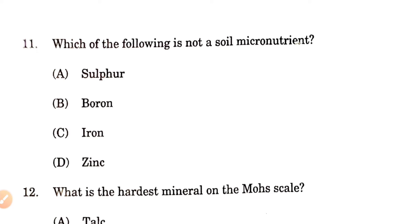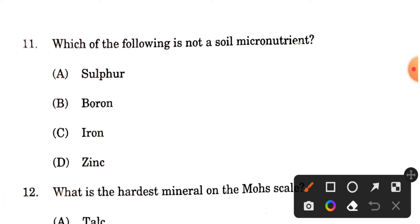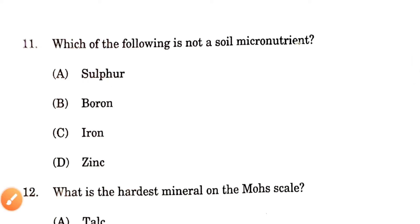Question number 11: Which of the following is not a soil micronutrient? In soil there are 17 essential elements, of which 8 are micronutrients: boron, carbon, copper, iron (ferrum), manganese, molybdenum, zinc, and nickel. Among the options, sulfur is not a micronutrient — it does not come under micronutrients. The others do. So sulfur is the correct answer.